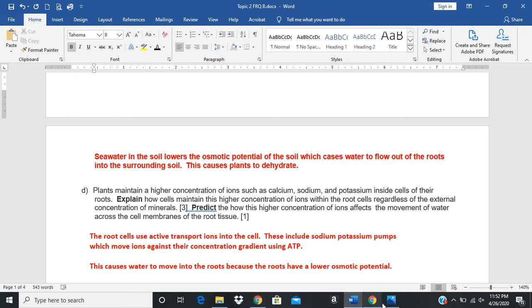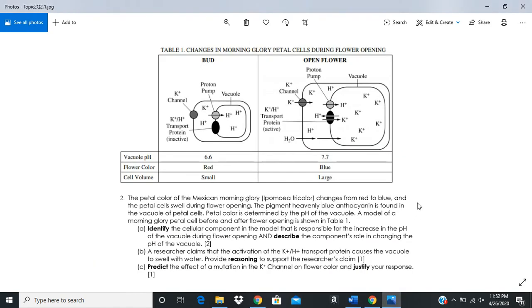Let's take a look at Question 2. Question 2 came off of an old AP test from last year. They gave you these two scenarios and showed you the changes in morning glory petal cells during flower opening. When they're buds, the flowers are red. They noticed that when they did this experiment, it changes from red to blue, and the cells of the petal swell during flower opening. The pigment heavenly blue anthocyanin is found in the vacuole of the petal cells and is determined by pH in the vacuole.